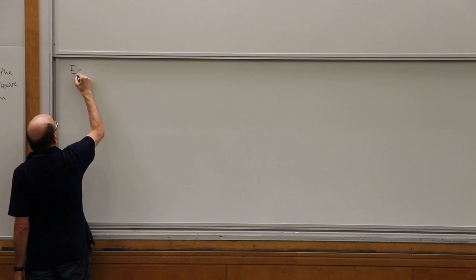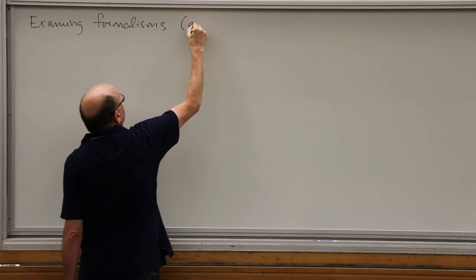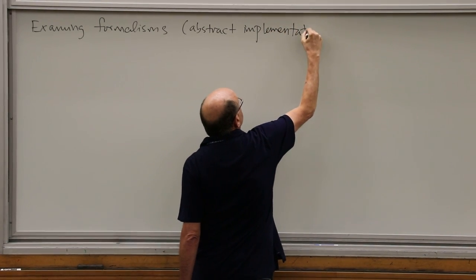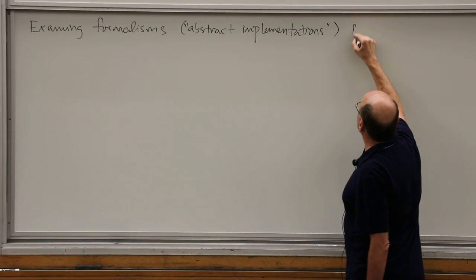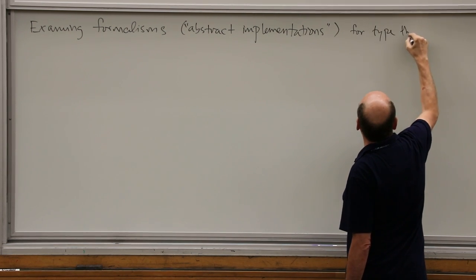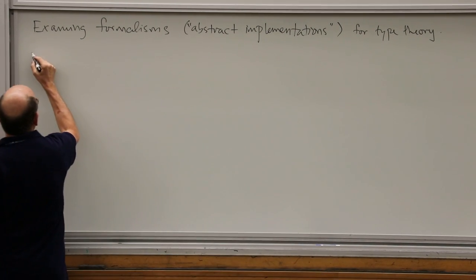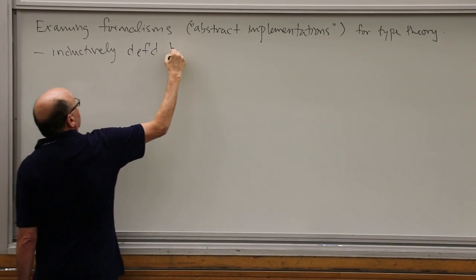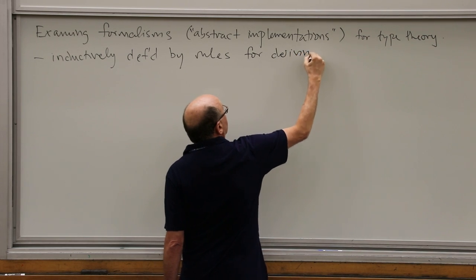Last time we were examining formalisms — you could say abstract implementations or bases for implementations for the type theory. These are always inductively defined by a bunch of rules for deriving various forms of judgments. The following forms are the ones we want. It's usual in these formalisms to distinguish type checking from what is called definitional equality.